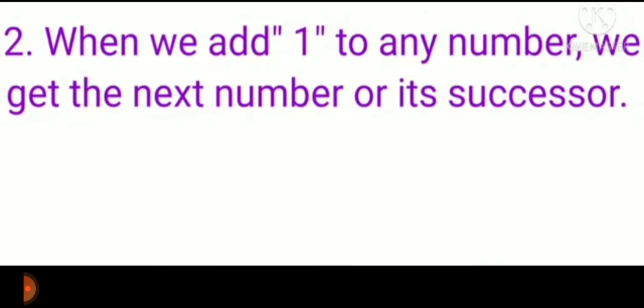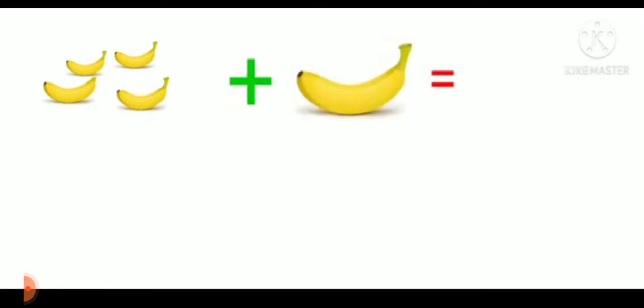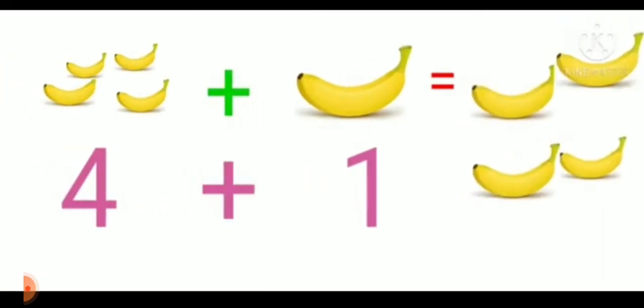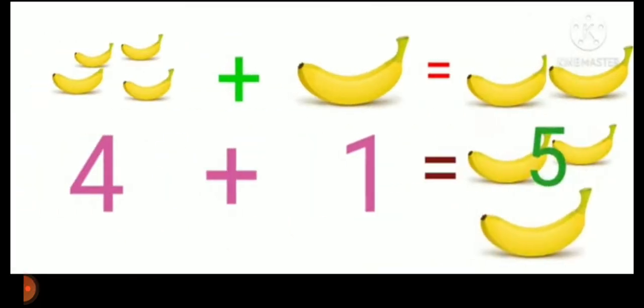When we add 1 to any number we get the next number or its successor. For example, there are 4 bananas. When we are adding 1 to it, how many are there? Total 4 bananas are there, and 1 we are going to add. So we are having total 5 bananas. So you can say if we are adding 1 to that number, the answer will be the next number or the successor of that number.